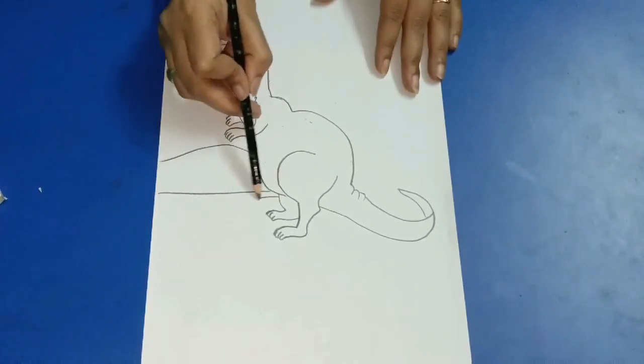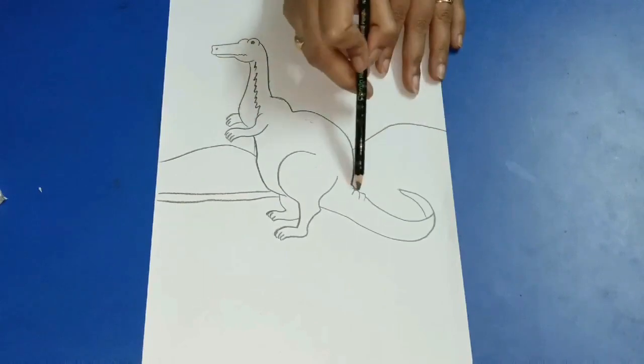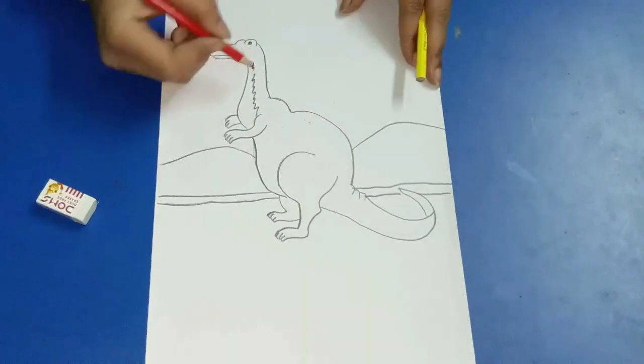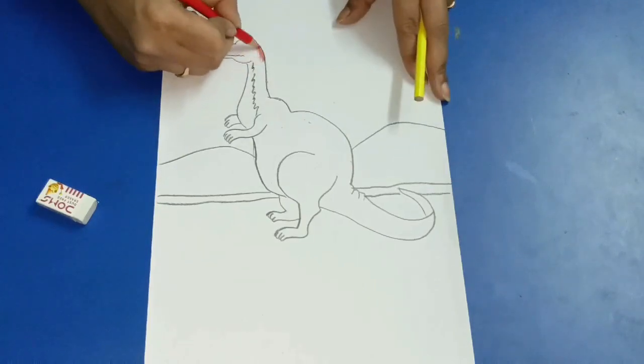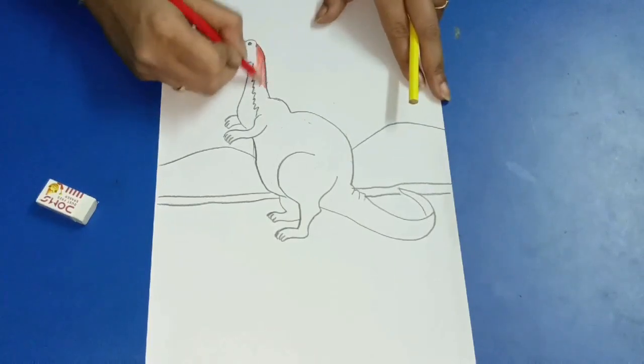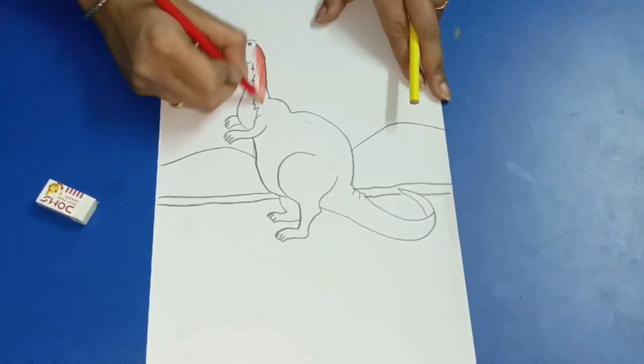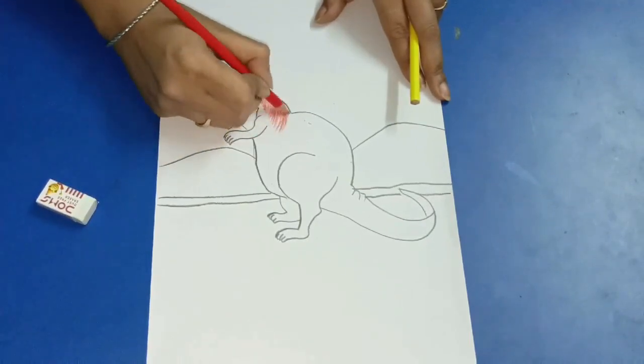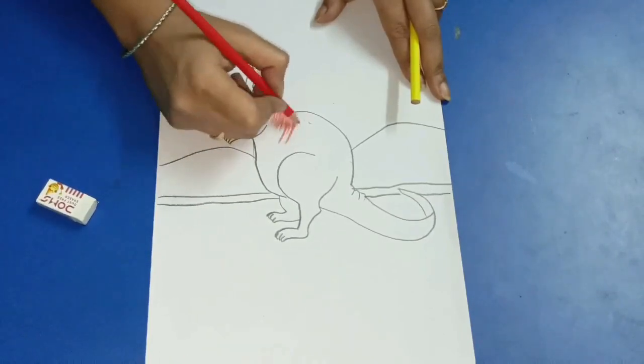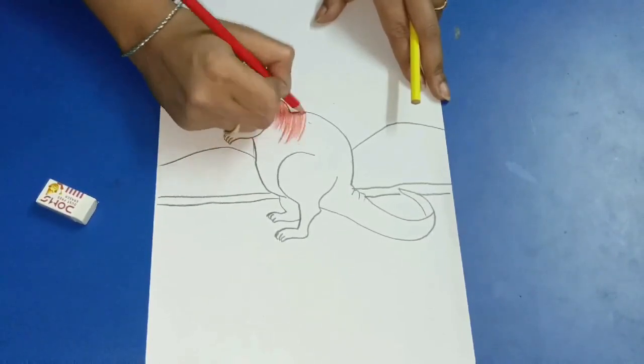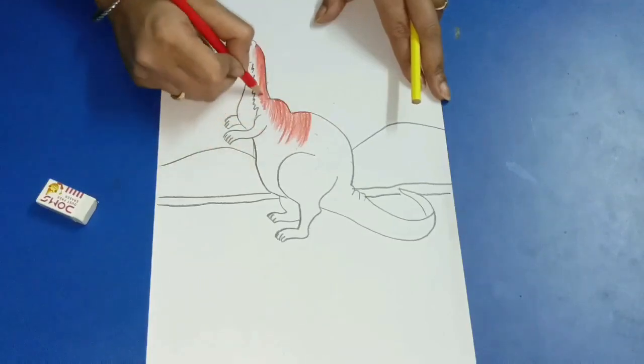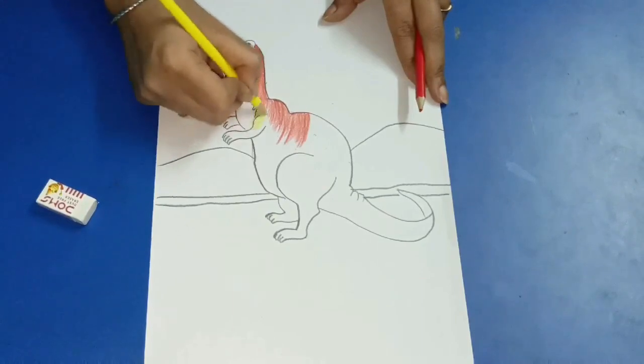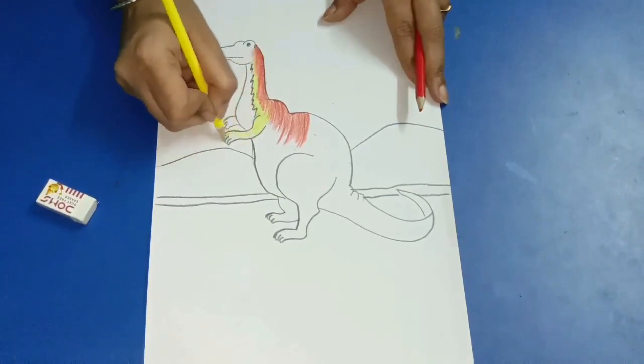Then we will draw our mountains. After that, we can start coloring. Firstly, we will take red color, then mix with yellow. Use yellow in the hand also.